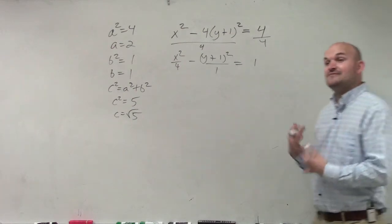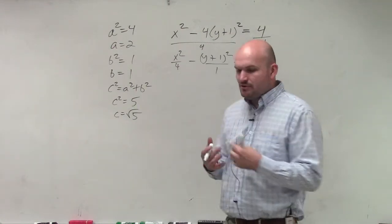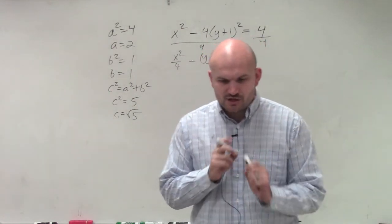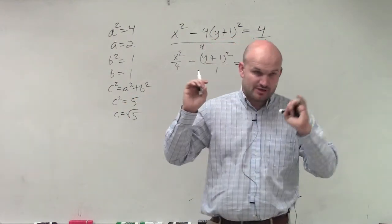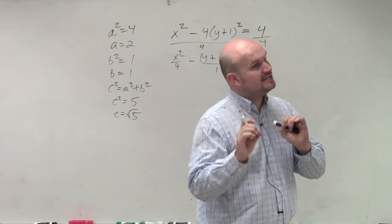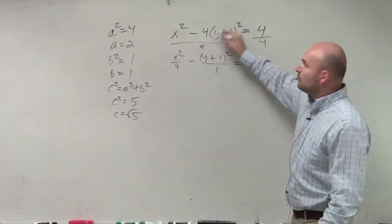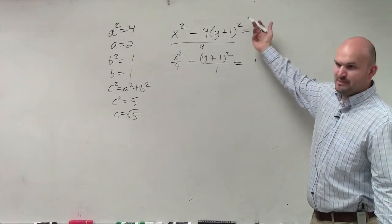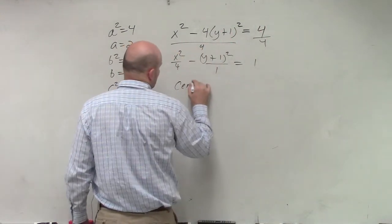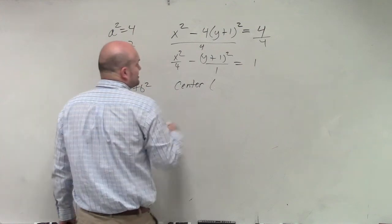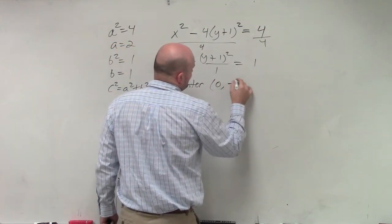The next thing is we need to identify the center. Remember that h is always with x, so I do not subtract anything from x, therefore my h is 0. And my k is always with y. Remember, it's y minus k. So y minus what would be positive 1? y minus negative 1. So my center is going to be at 0, negative 1.